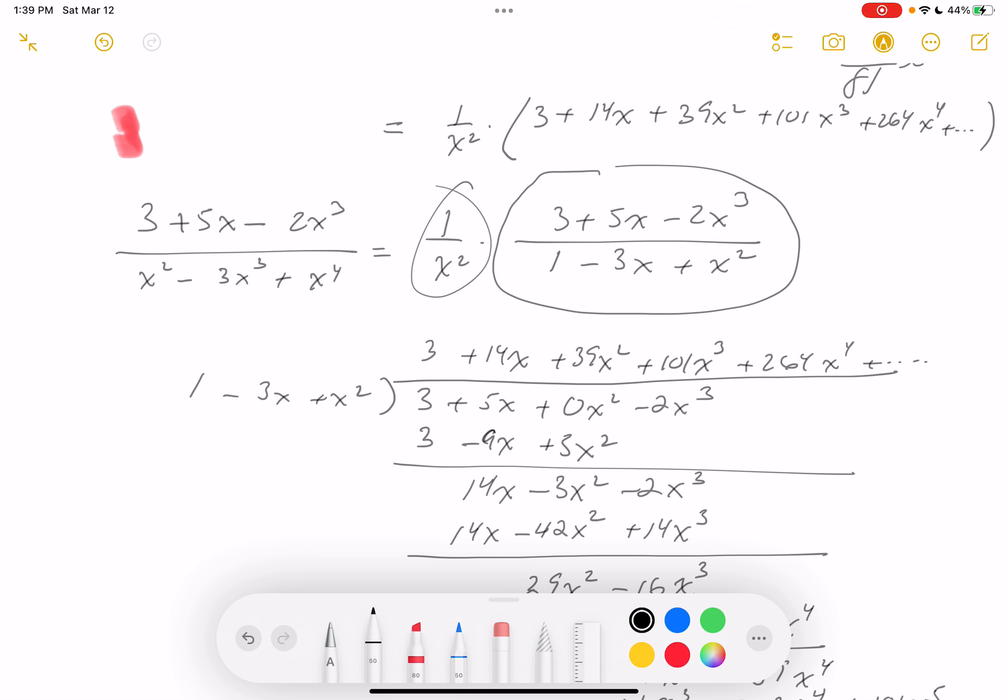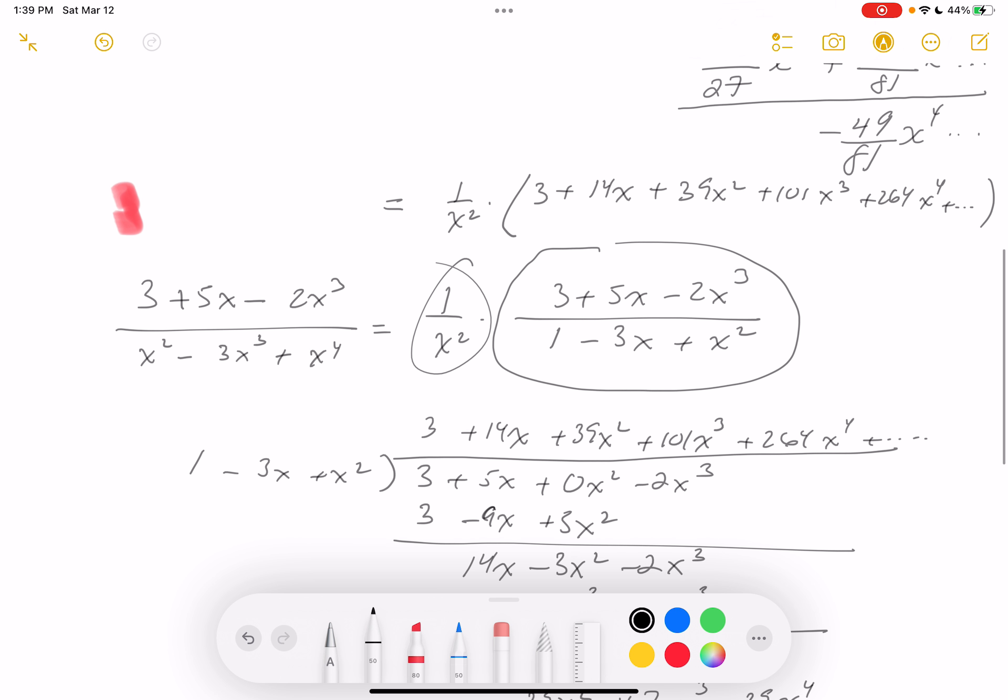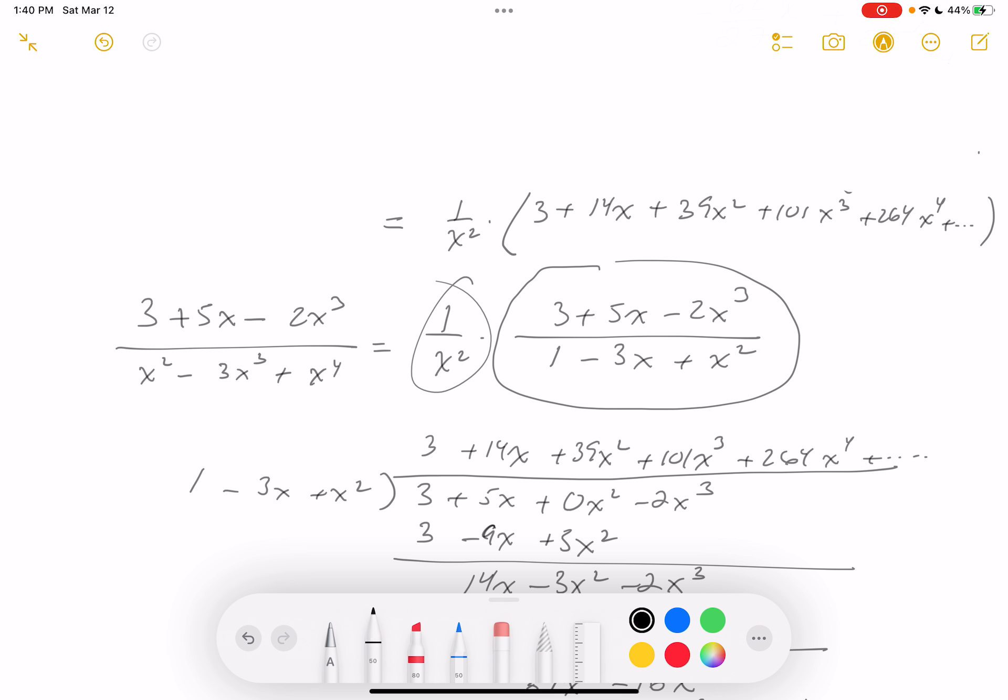Well, I'm going to multiply it. Let me get my eraser out because I need some space. Then we'll check the key. So what do you get? 3 over x squared plus 14 over x plus 39 plus 101x plus 264x squared.